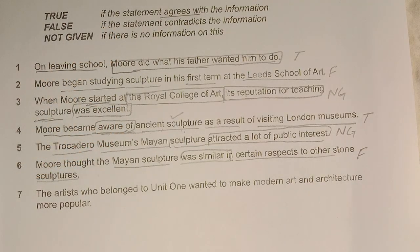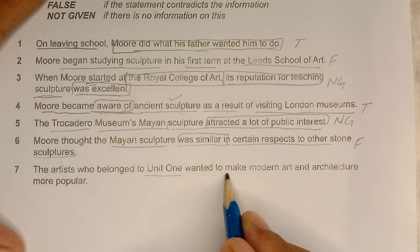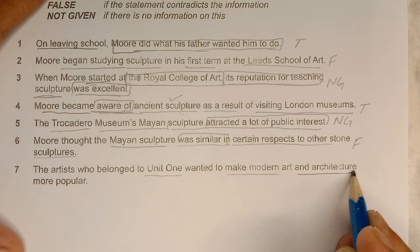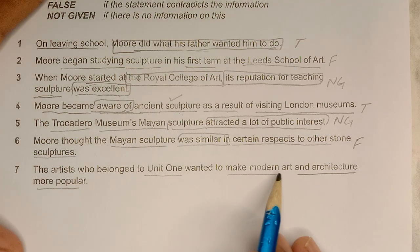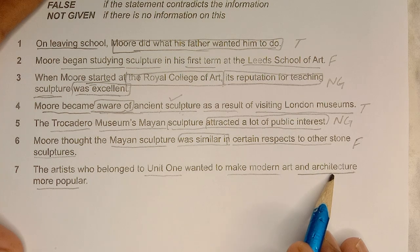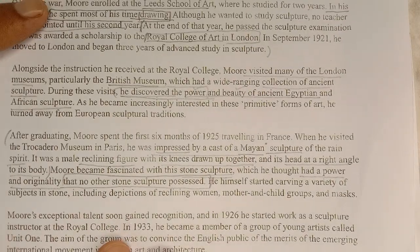Last statement: 'The artists who belonged to Unit One wanted to make modern art and architecture more popular.' This is the key phrase — Unit One. جو Unit One کے artists ہیں وہ چاہتے ہیں کہ جدید art اور فن تعمیر کو popular بنائیں۔ Let's find the reference to Unit One in the text.